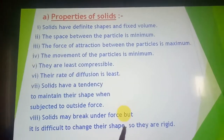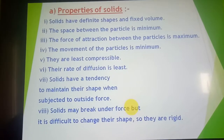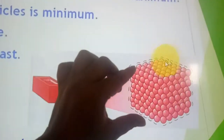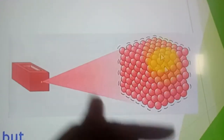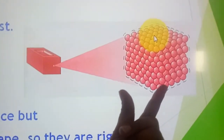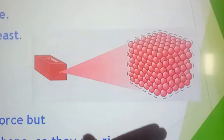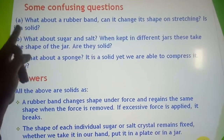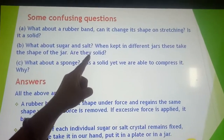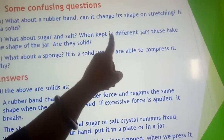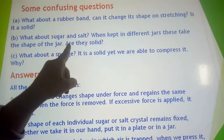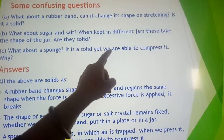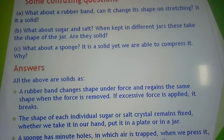In a solid brick block, you can see the particles are compactly packed with very little space, so they are not compressible, they maintain their shape, and the diffusion rate is very less. Now consider this: can a rubber band change its shape on stretching? Is it a solid? What about sugar and salt kept in different jars — they take the shape of the jar, are they solid?